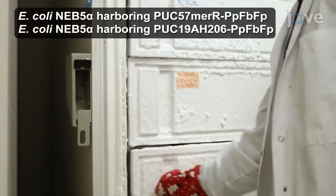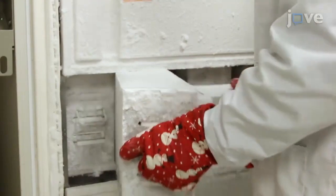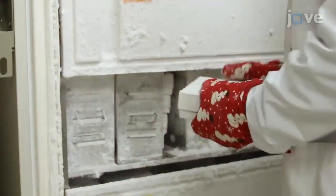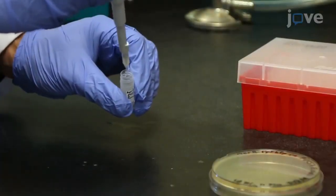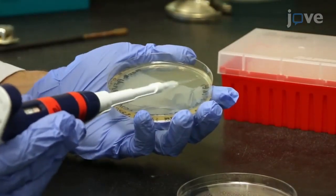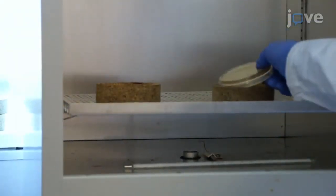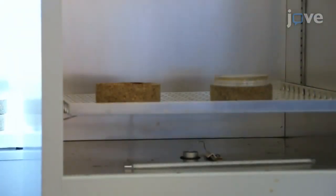To prepare for the assay, retrieve the mercury-inducible biosensor and the constitutively expressed biosensor from a minus 80 degrees Celsius cryostock. Plate the cells onto lysogeny broth plates containing 120 micrograms per milliliter of ampicillin. Grow the plate cultures in an incubator at 37 degrees Celsius overnight.